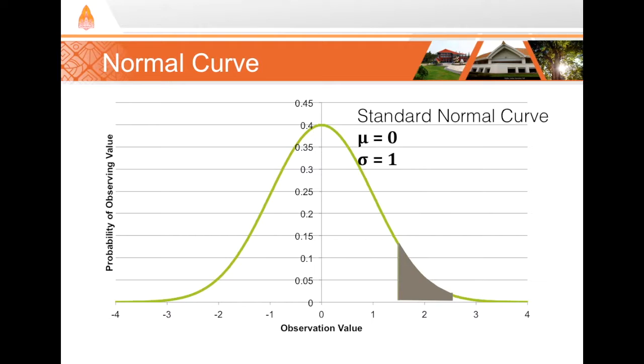The area here that's shaded represents the proportion of observations that we would expect on average to be between 1.5 and 2.5. So I ask you, can you estimate that area? What would you say the area under that curve that's shaded is?